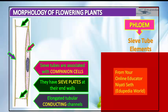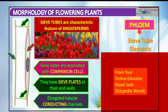Companion cells are specialized parenchymatous cells closely associated with the sieve tube. They work in conjunction with each other. The sieve tube elements and companion cells are connected by pit fields present between their common longitudinal wall. The companion cell helps in maintaining the pressure gradient in the sieve tube. Sieve tubes are a characteristic feature of angiosperms.